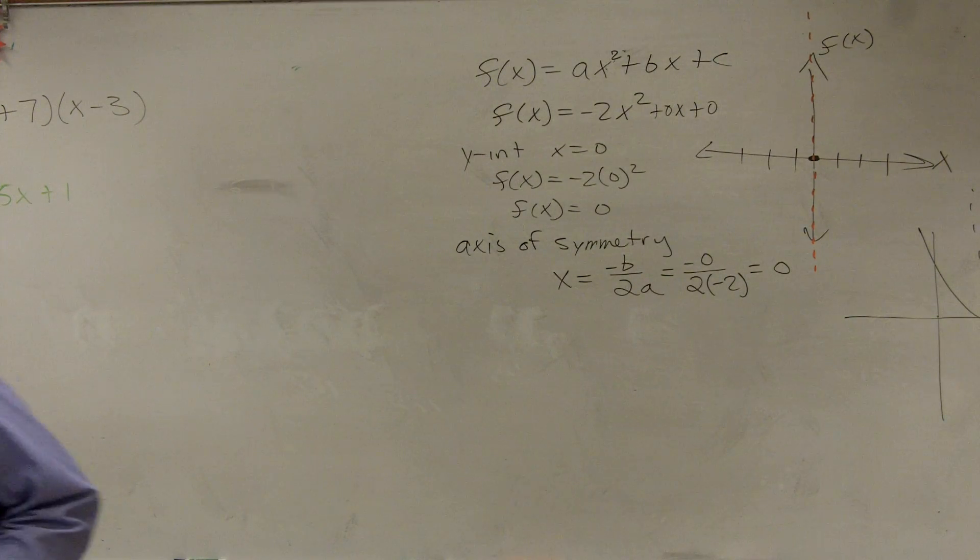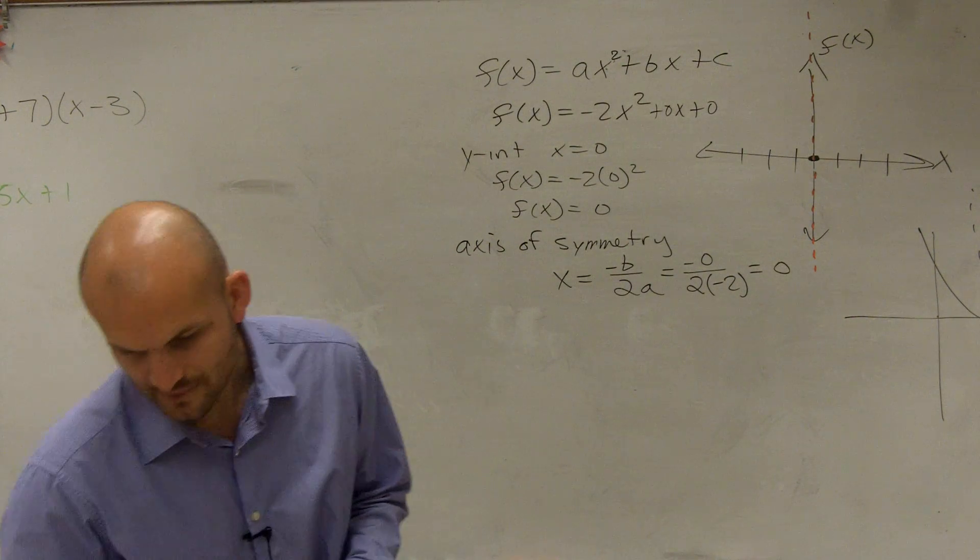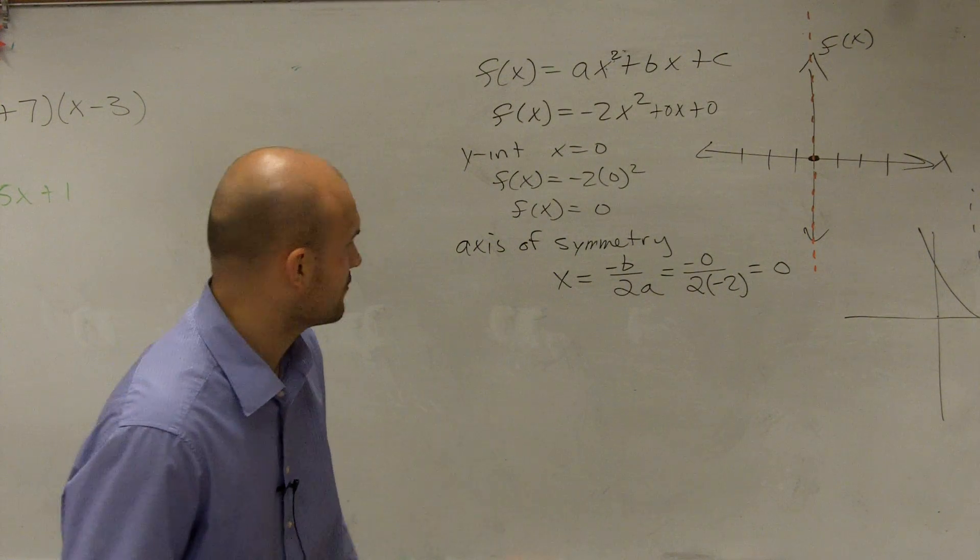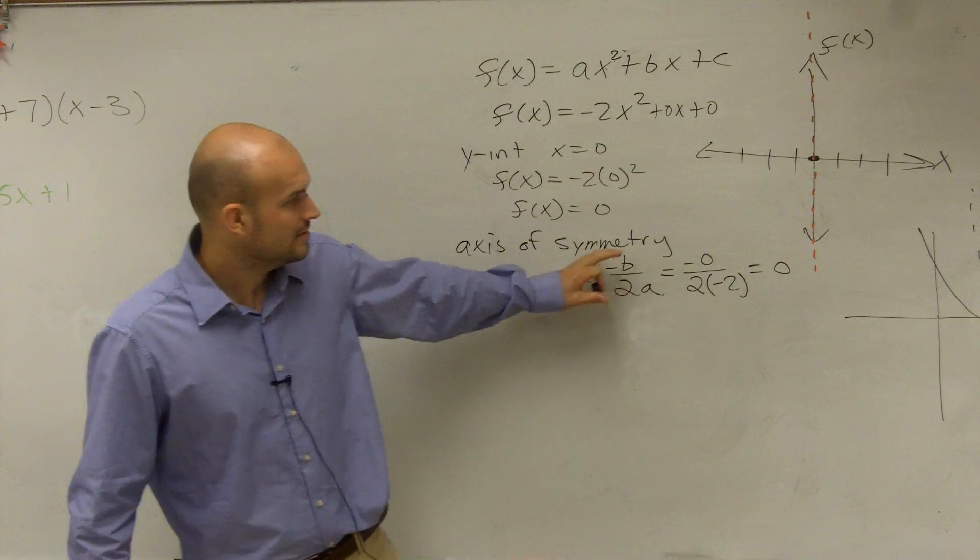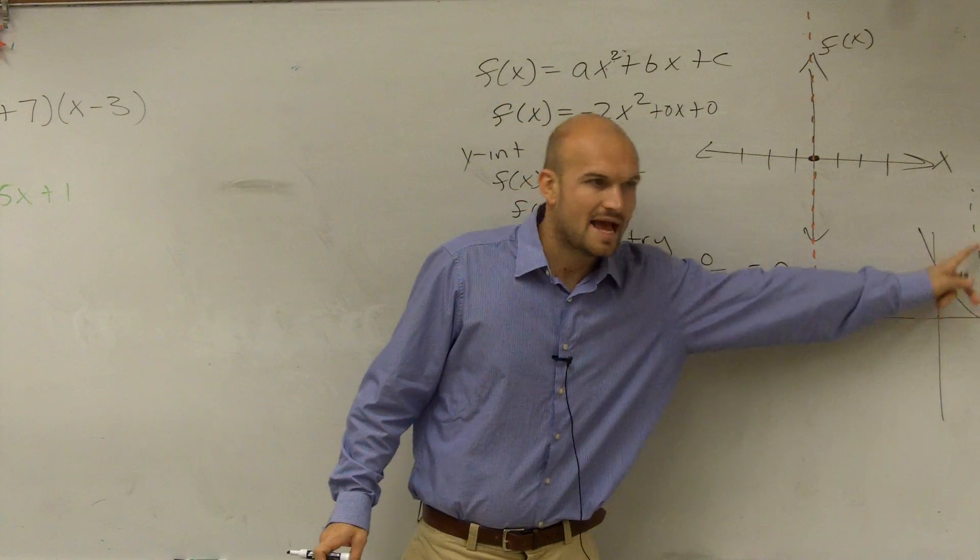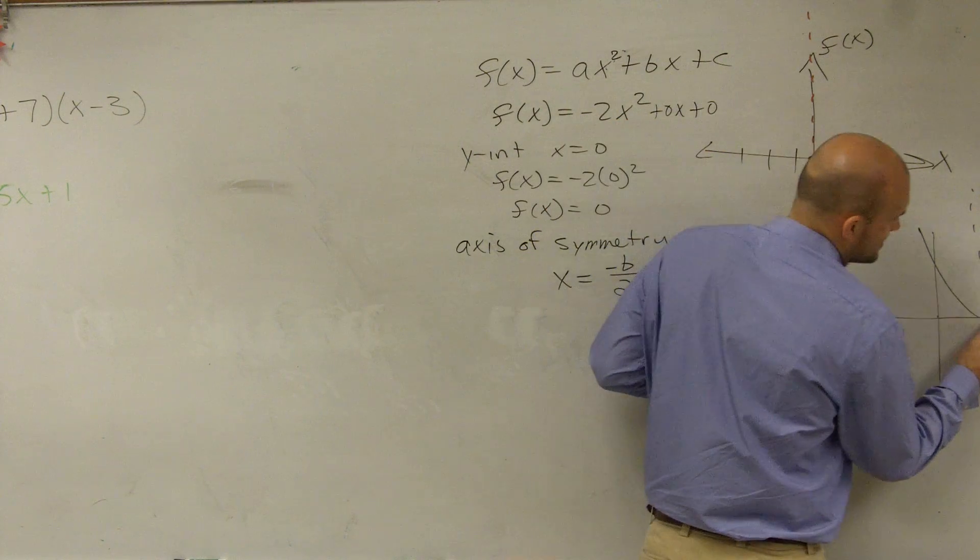And then it says, and the x-coordinate of the vertex. Well, is the axis of symmetry the same thing as your x-coordinate? Right? The axis of symmetry, I'm sorry, of your vertex.